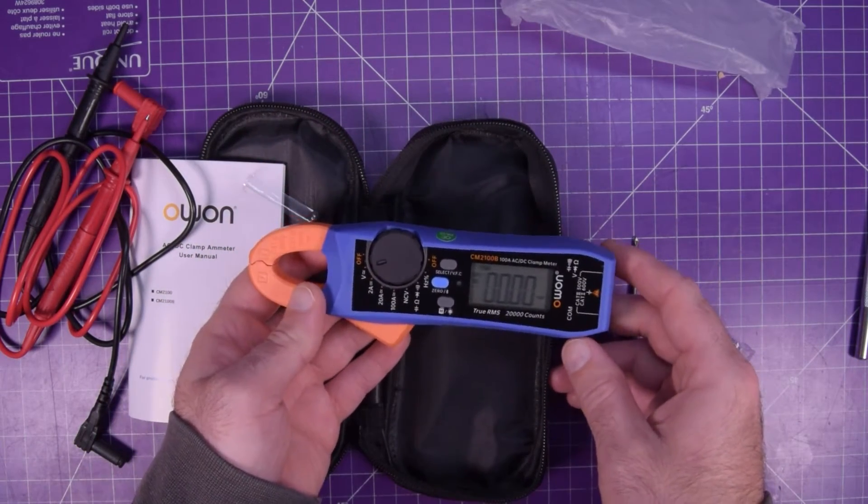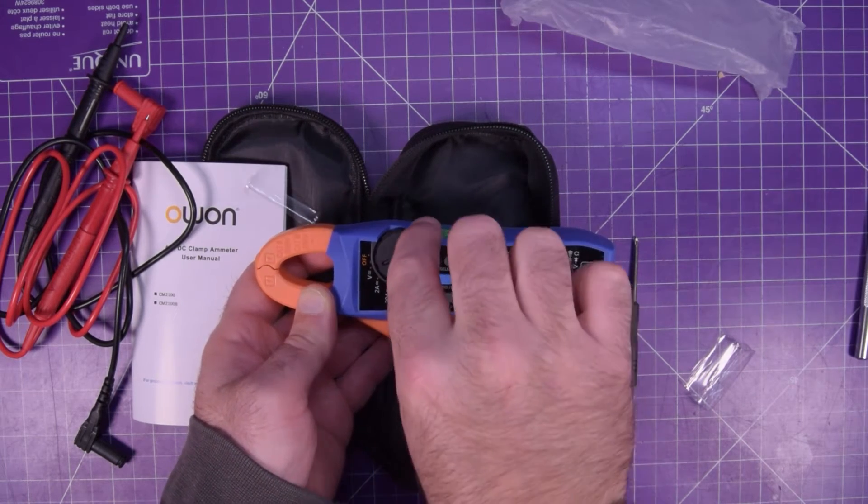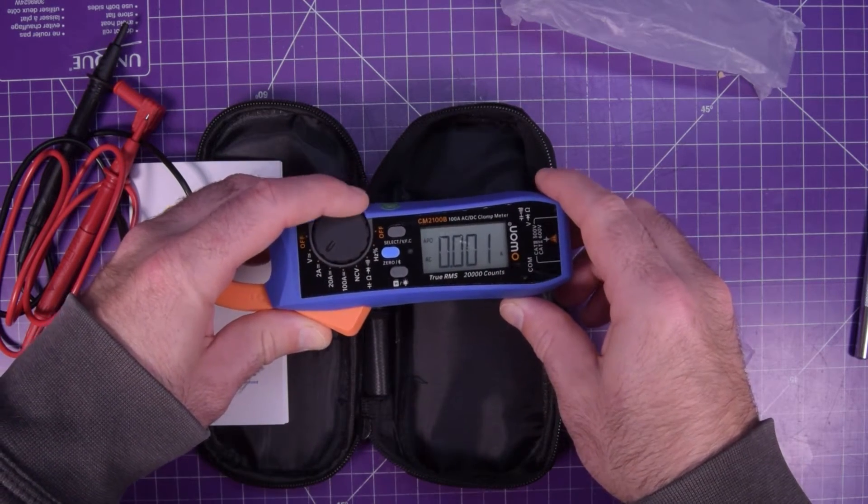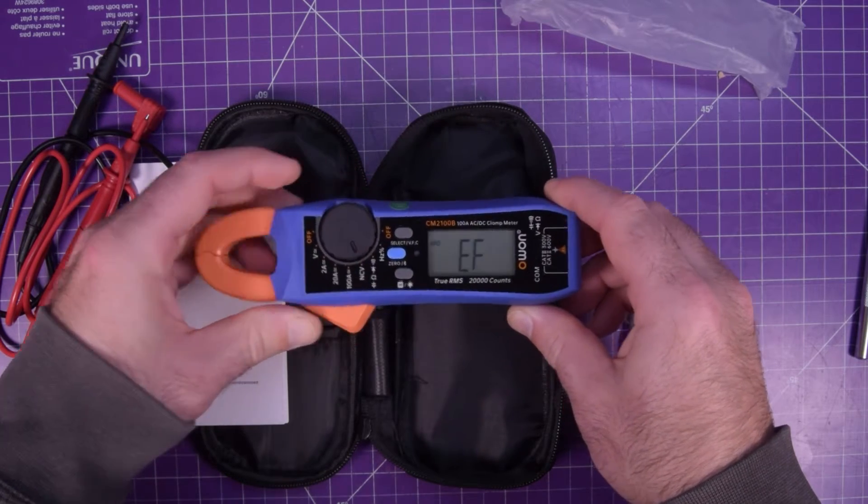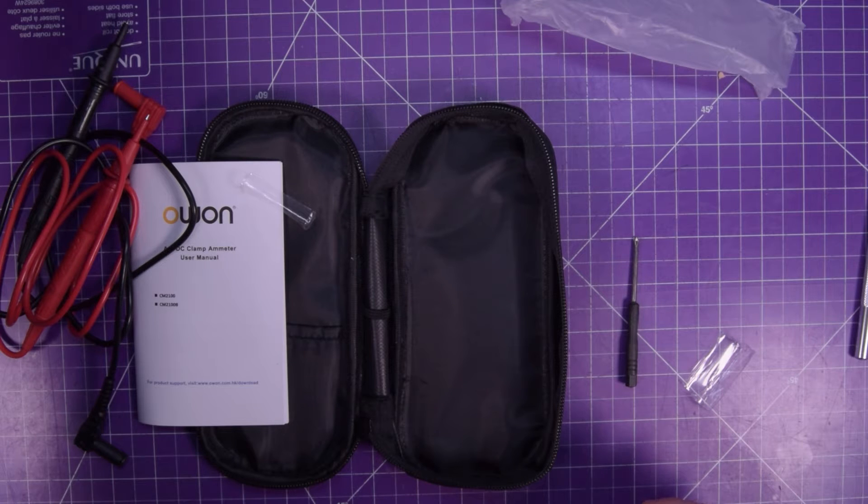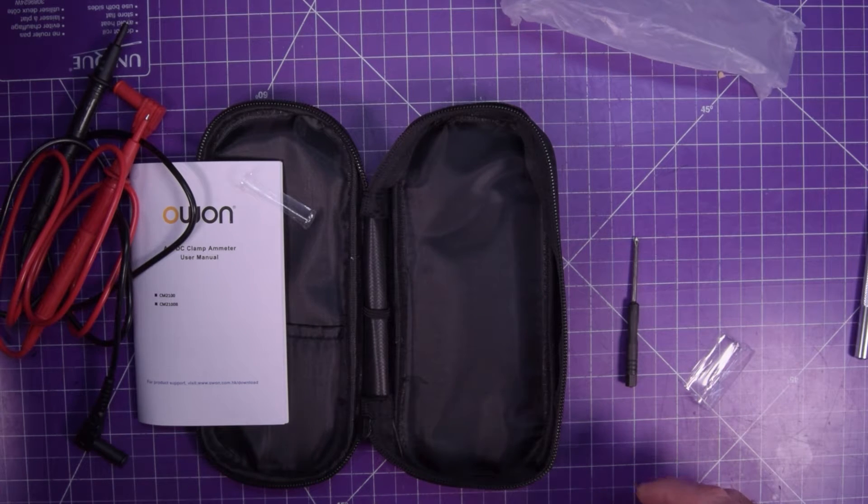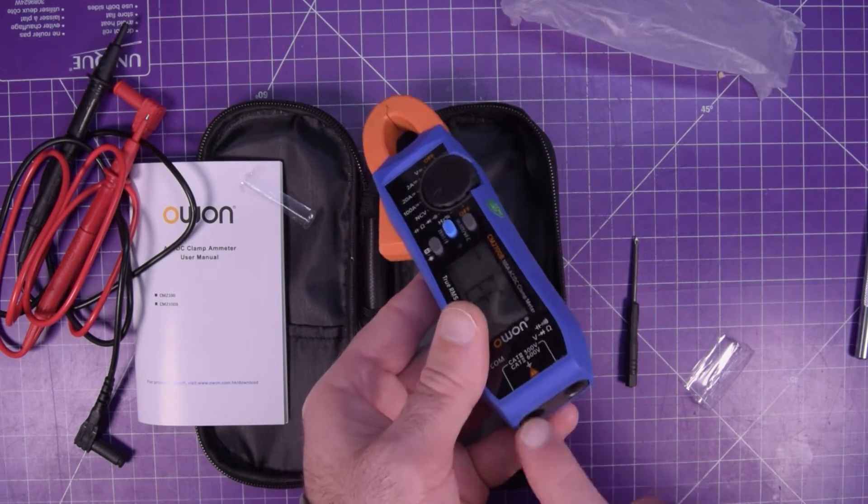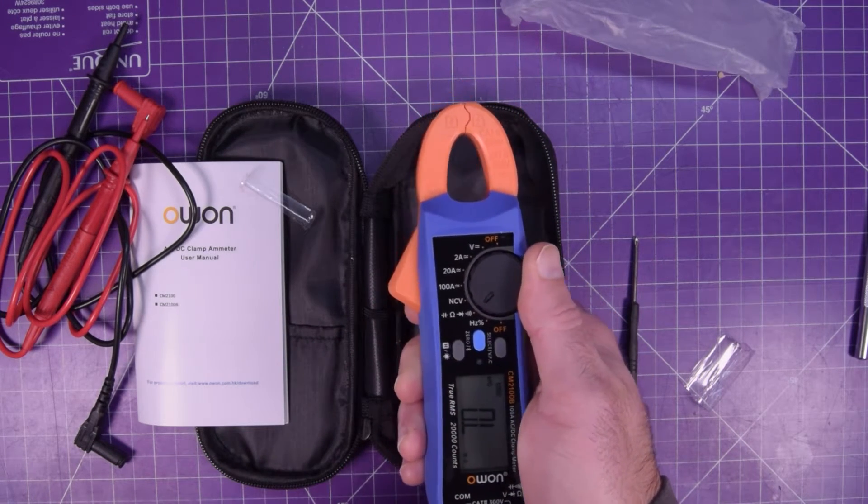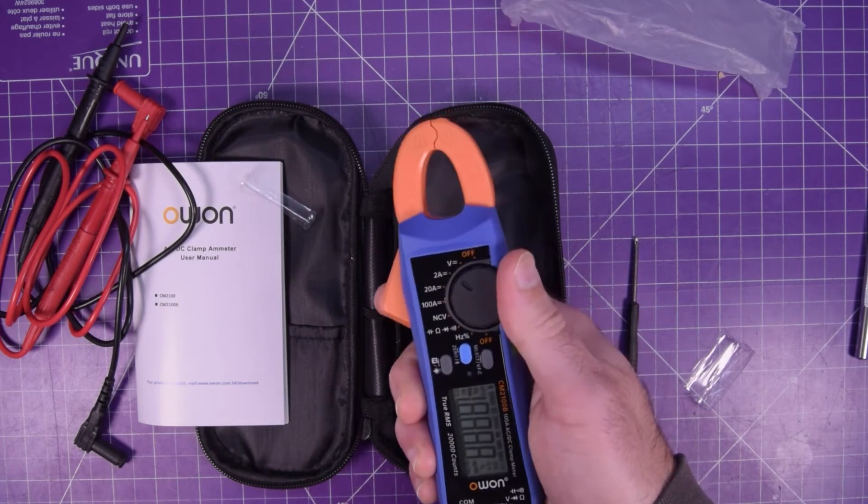First we got voltage, let's see if it defaults AC or DC, it defaults DC, very nice. And then you should be able to hit this to get AC, yep. And then we've got the 2 amp range, the really thin lettering here is really neat. 20 amp range, 100 amp range, non-contact voltage detector, which I believe is this little bump in the top here. It's not super sensitive, though. Then here you got capacitance, resistance, diode, and continuity. Then you've got frequency, and then off. Oh, we got off on both ends, I kind of like that.